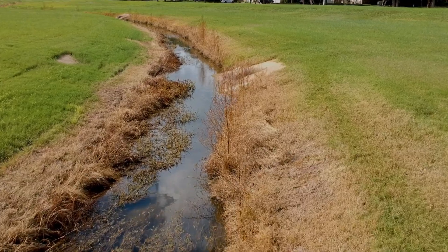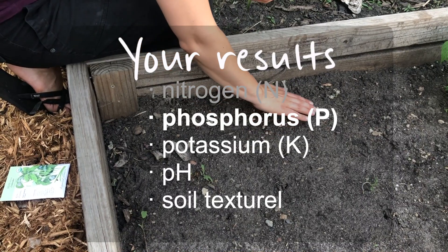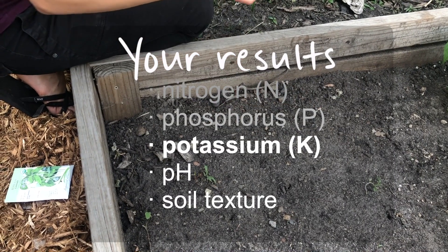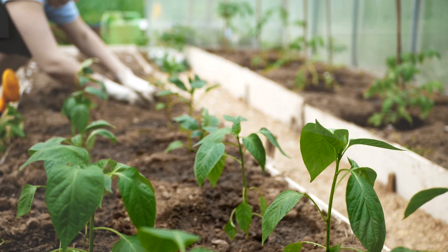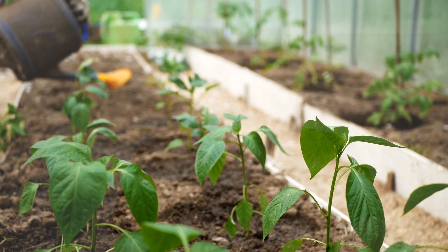The last of our three macronutrients is potassium, which supports disease resistance and plant hardiness. It might feel like these numbers don't mean much by themselves — that's totally okay. We'll put them into more context in just a bit.